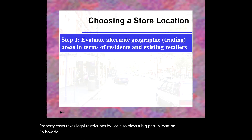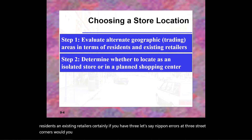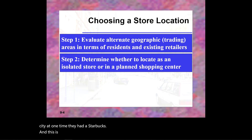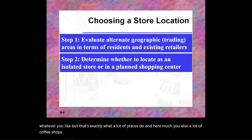When choosing a store location, you evaluate alternate geographic areas in terms of residents and existing retailers. For example, if there are three Paneras at three street corners, would you open a fourth on the other corner? In New York City, Starbucks once occupied all four corners of one street. In Montreal too, many coffee shops and restaurants locate close to each other, and there's still plenty of traffic.